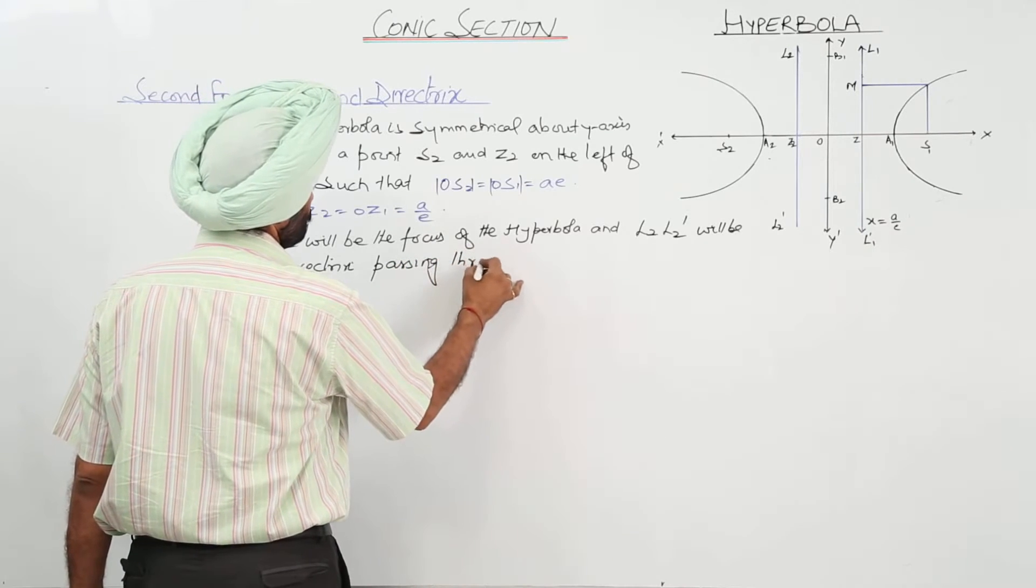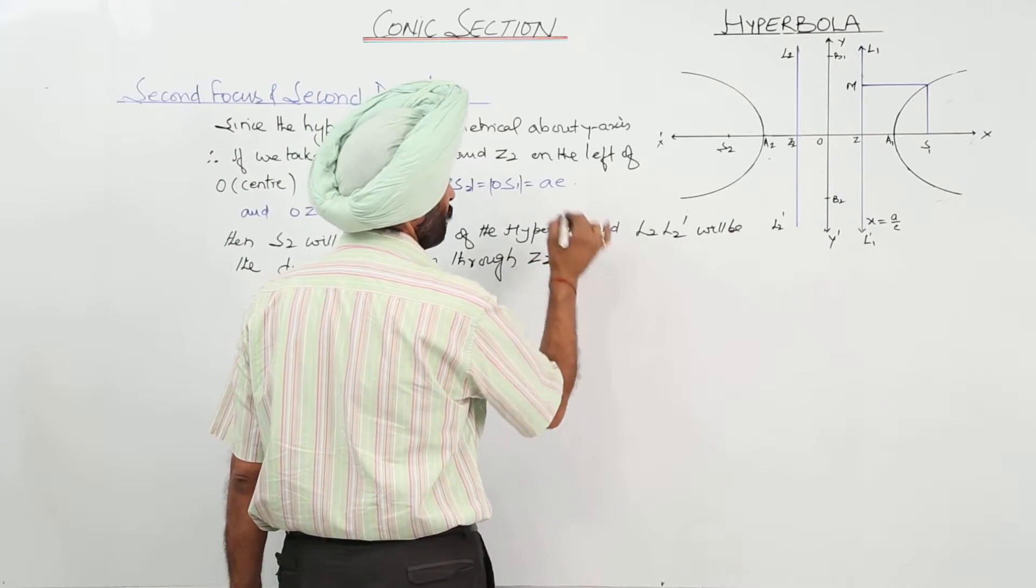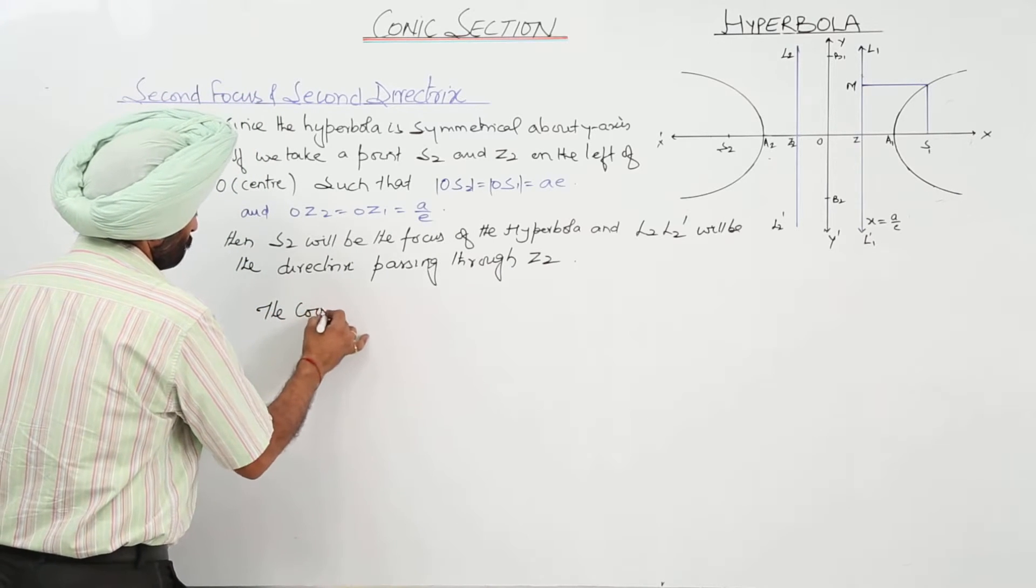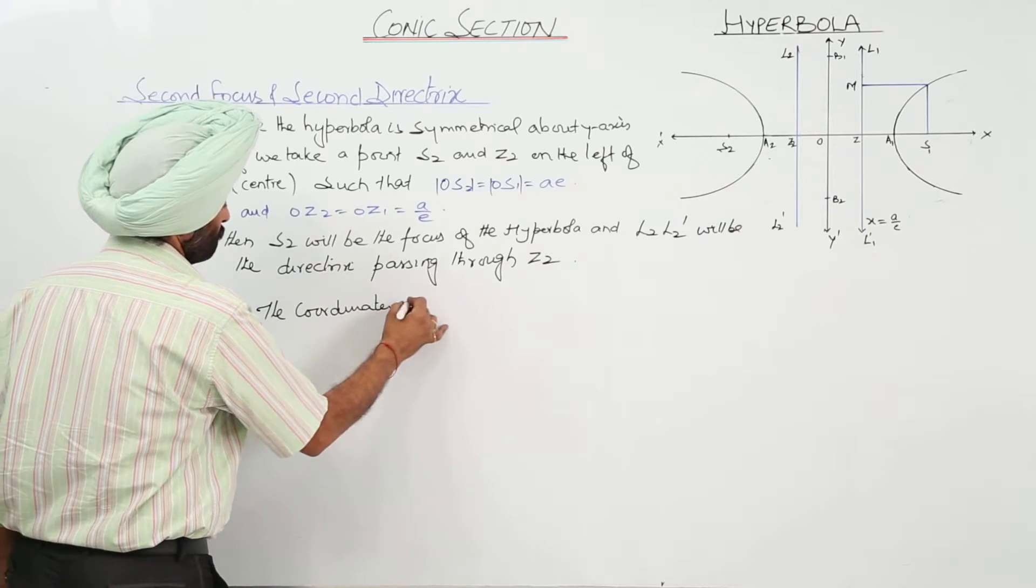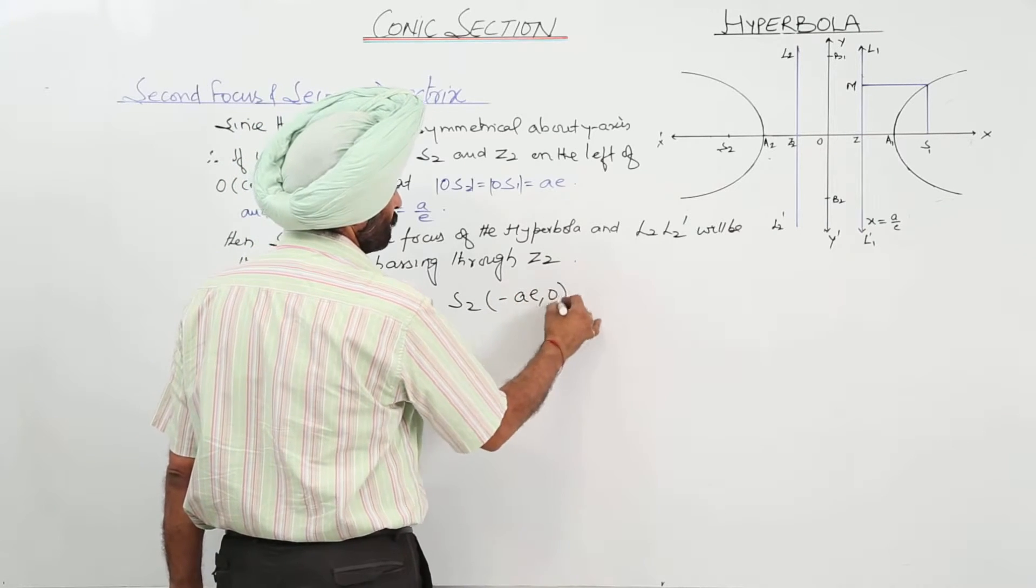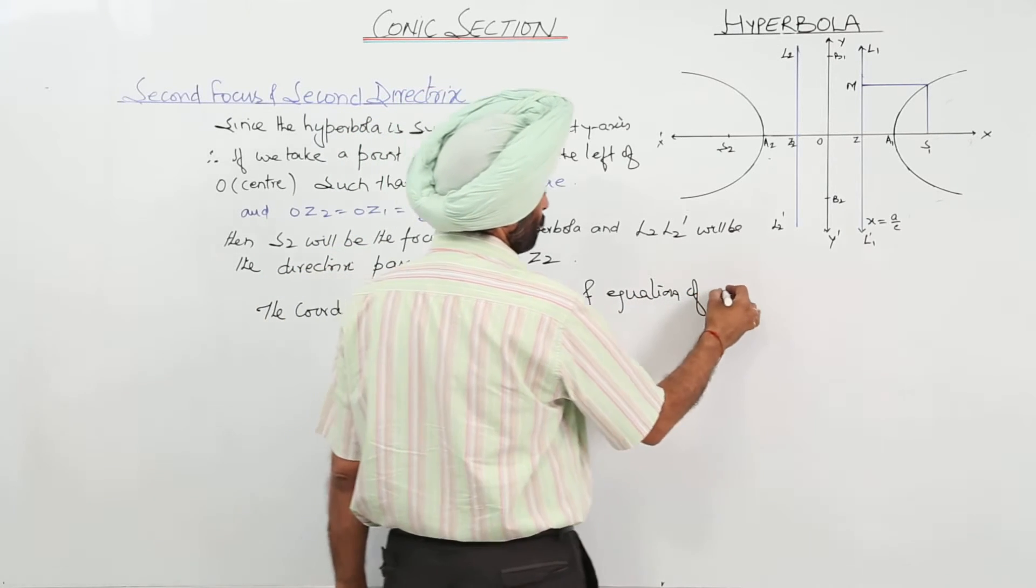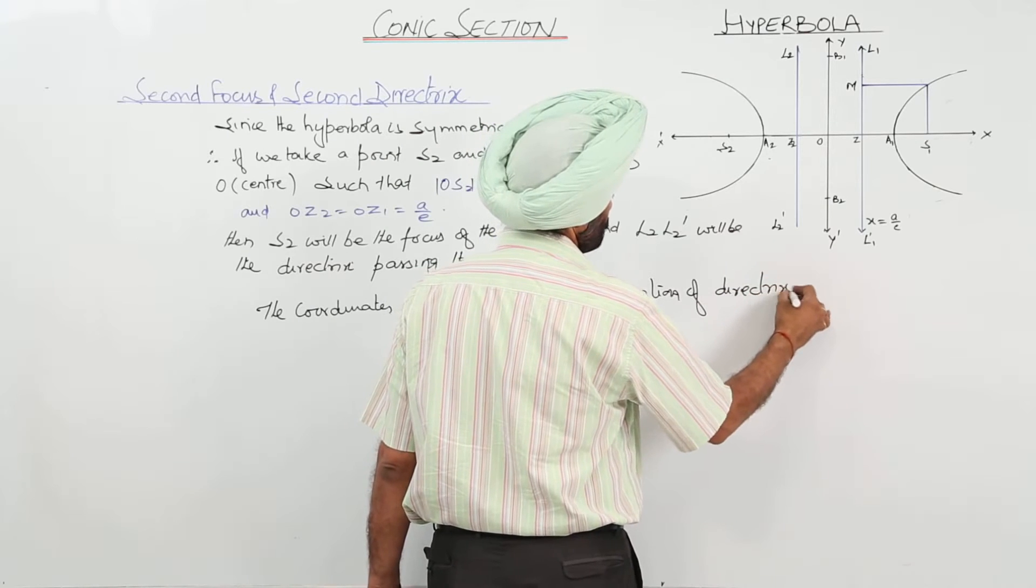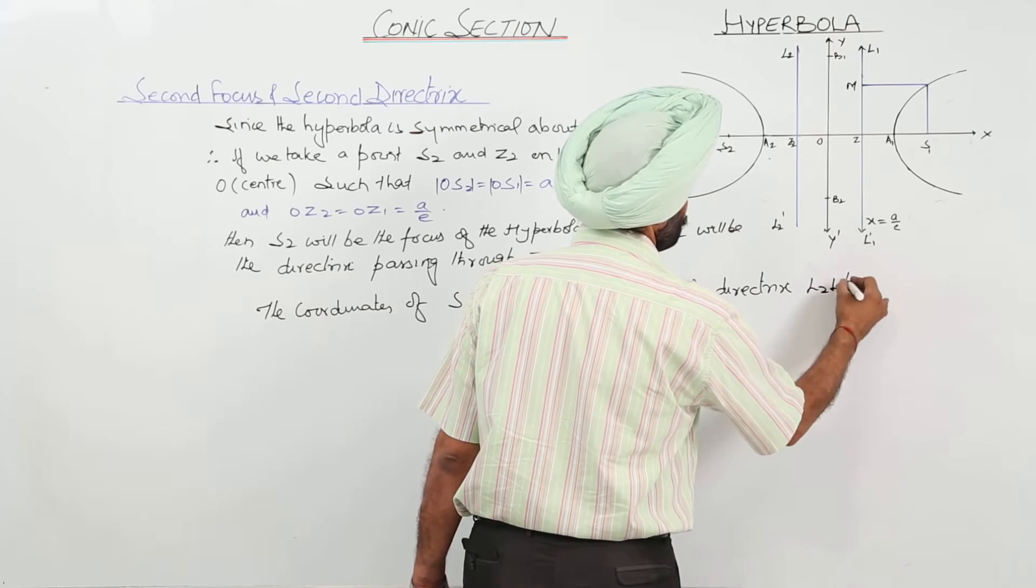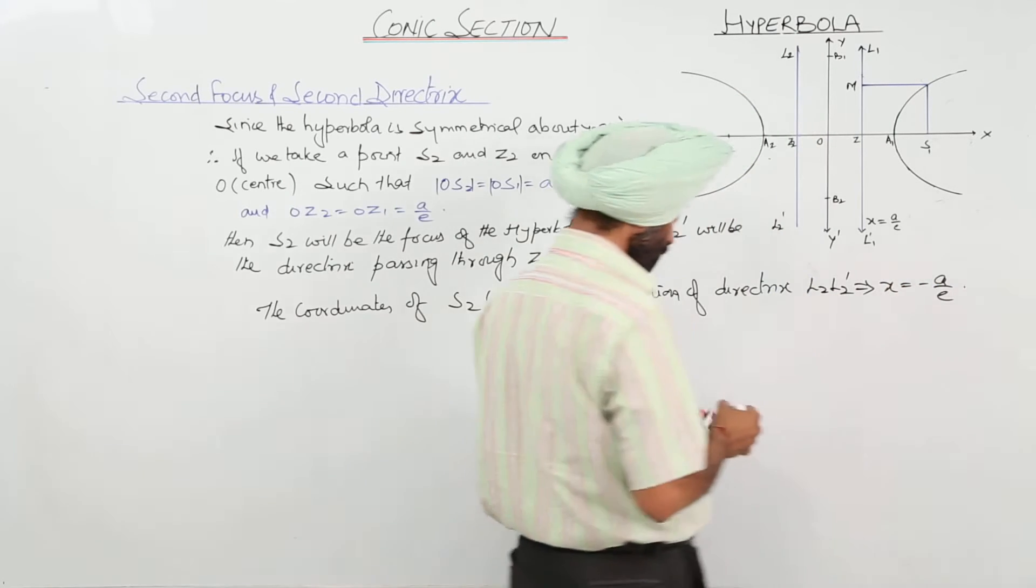Now, the coordinates passing through Z2 - the coordinates of S2 will be negative AE, 0, and equation of directrix L2L2 dash will be X is equal to negative A upon E. Is it clear?